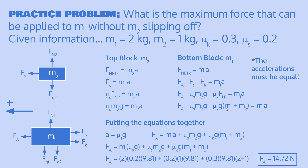We now have two equations and two unknowns: acceleration and the applied force FA. From Equation 1, dividing both sides by m2, we get acceleration = μs × g. We then rearrange Equation 2 to isolate FA, adding the friction terms to both sides. Substituting the expression for acceleration from Equation 1 into Equation 2 gives a general equation for the maximum applied force before mass 2 slides off mass 1, in terms of the given quantities.